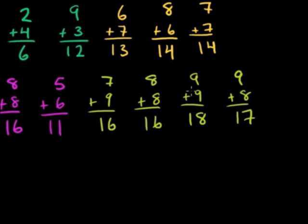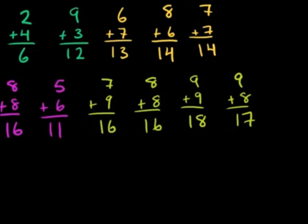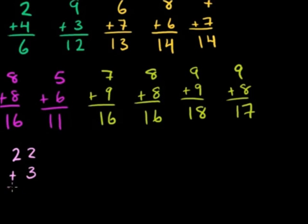Now let's tackle some larger digit numbers. Let's do 22 plus 3. We go to the ones place: 2 plus 3 is 5 — we didn't have to carry anything. In the tens place, we just have this one 2 sitting there — 2 plus nothing, it's two tens, two dimes. So we put that down and get 25. Two dimes and five pennies, or 25 cents.